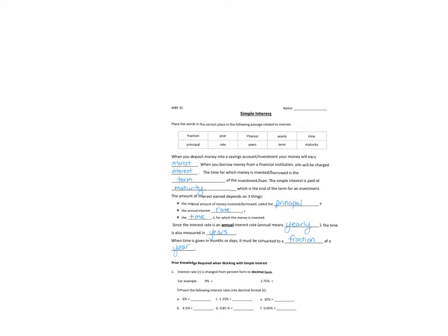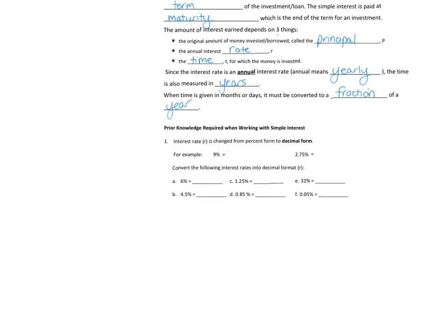A little bit of prior knowledge that we need to work with in order to help us calculate simple interest. First things first, interest rates are given as percentages, but we always need to change them into decimal form. For example, you might remember this from previous math classes, 9% can be written as 0.09. If you're forgetting how to do that, remember you're just dividing by 100, or moving the decimal two places to the left.